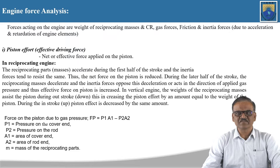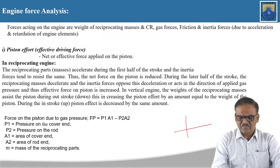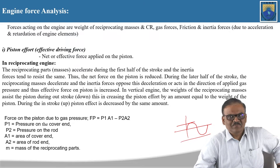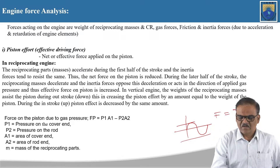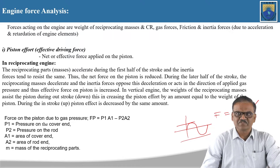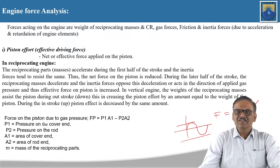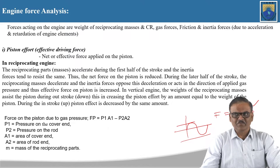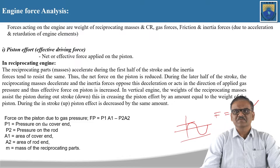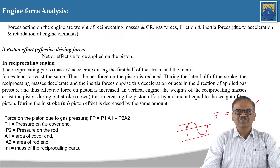Since this is simple harmonic motion, acceleration occurs during the first half and deceleration during the second half. Therefore, force equals m times a, so this acceleration — that is the inertia force — opposes during the first half and reduces during the latter half. In case of a vertical engine, the weights of the reciprocating masses resist the piston outward stroke — when it is coming down — increasing the piston effort by an amount equal to the weight of the piston. During the upward stroke, the piston effort is decreased by the same amount.